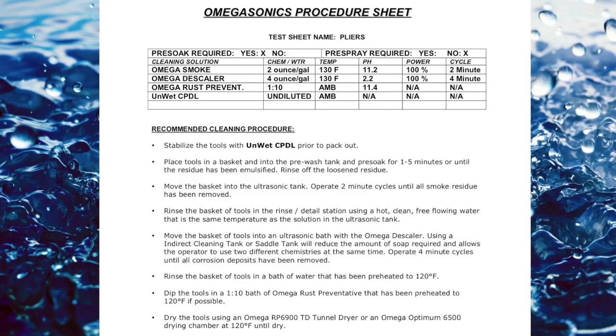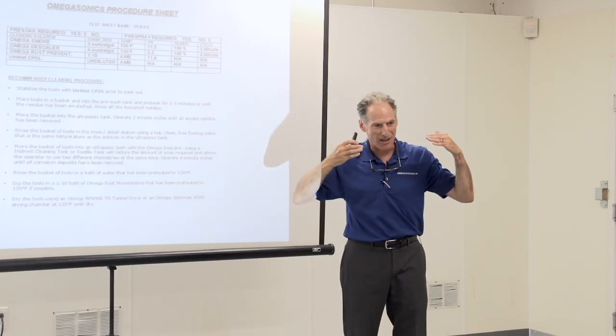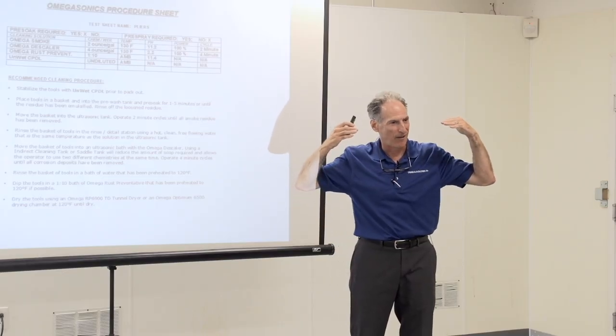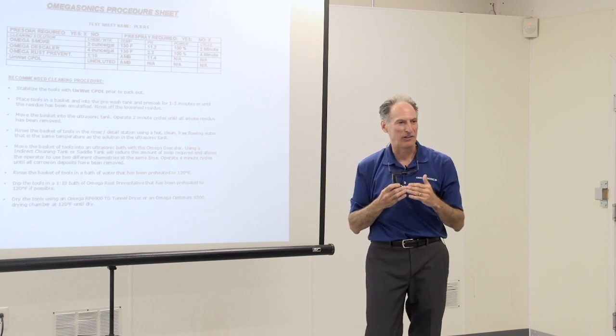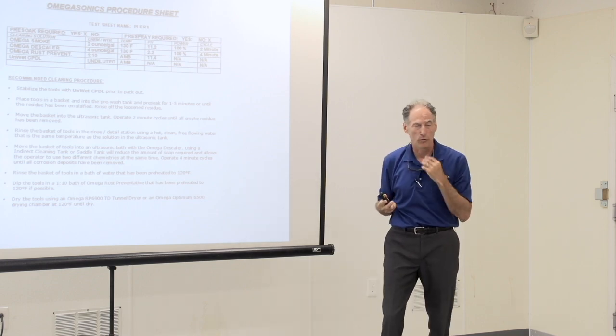This is a two-step process. The reason it's a two-step process is we have to remove the soot, and tools are generally also greasy, and then we have to remove the rust. We have two different chemistries - an alkaline chemistry and an acidic chemistry. If I mix the two together, it's not like I'm going to get a one-step action. I'm basically going to have worthless water.